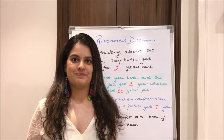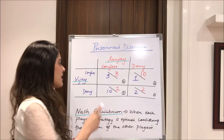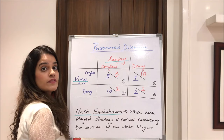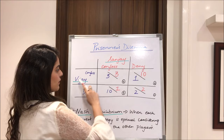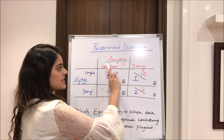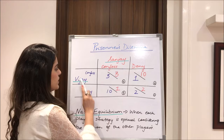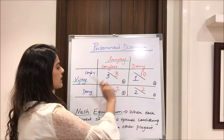I'll now explain this with the help of a payoff matrix. Our two convicts are Vijay and Sanjay, and both have two choices each: to confess or to deny. If both confess, both go to jail for three years each. If Sanjay denies and Vijay confesses, Vijay is free in one year while Sanjay gets ten years. If Vijay denies and Sanjay confesses, Sanjay gets one year and Vijay gets ten years. And if both deny the murder, they each get two years.